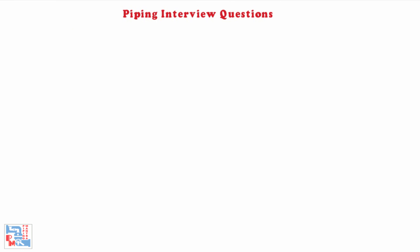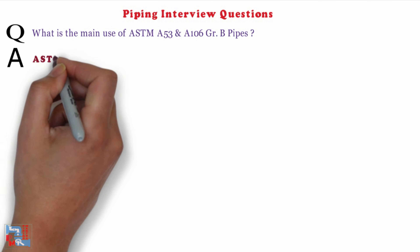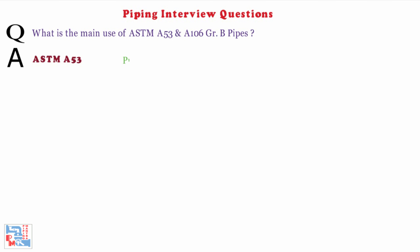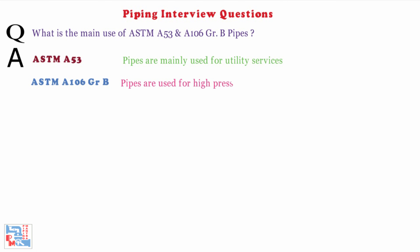Next, what is the main use of ASTM A53 and A106 Grade B pipes? ASTM A53 pipes are mainly used for utility services, whereas A106 Grade B pipes are used for high pressure and high temperature services.